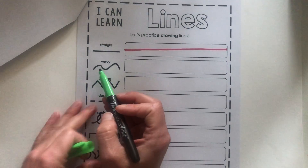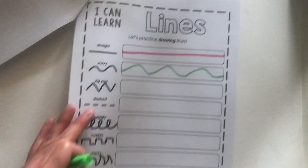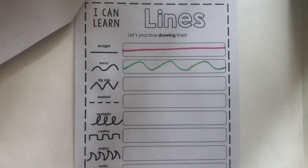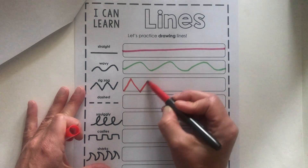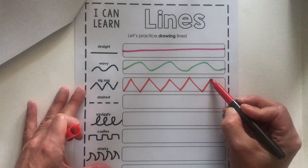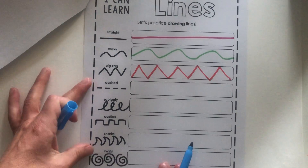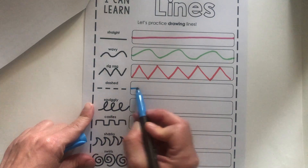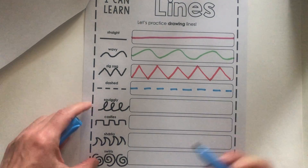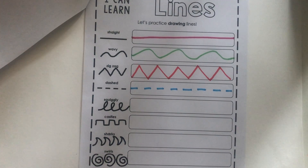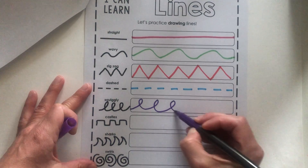Remember I drew a wavy line on the other page — there's my wavy line. Next up is zigzag. Zigzag is such a fun line to draw — it reminds me of mountains. Next up is dashed. A dashed line is like a whole bunch of little lines, or one big line that's been broken up. Next we have squiggly. Squiggly lines remind me of a roller coaster.